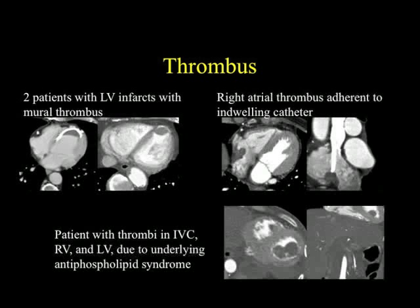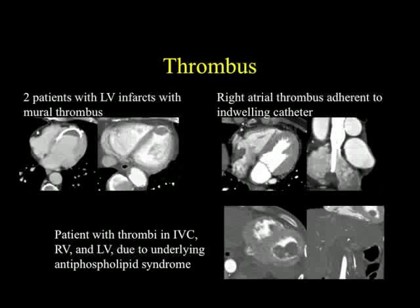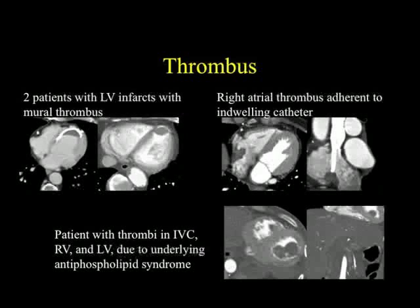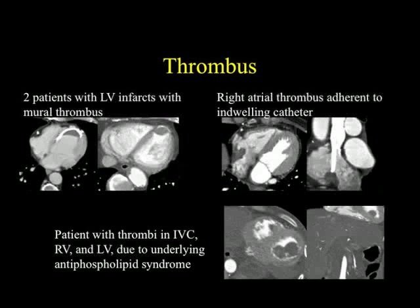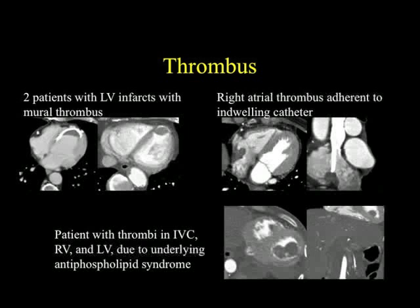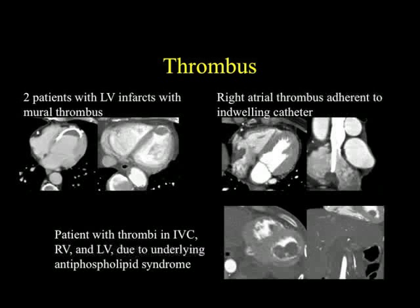Here's a nice example where you see the catheter extending into the right atrium and the thrombus adherent to the catheter — very nicely visible on axial images, and even more obvious on coronal or sagittal images. Here's a patient with thrombus in the IVC, right ventricle, and left ventricle due to antiphospholipid syndrome. Sometimes we see multiple areas of thrombus and infarction; if you see something in one of the chambers and then find infarcts in the spleen or kidneys, that makes the diagnosis even more certain.